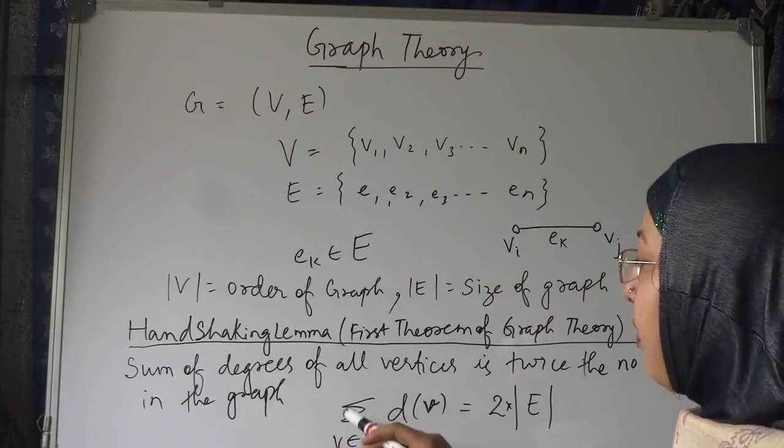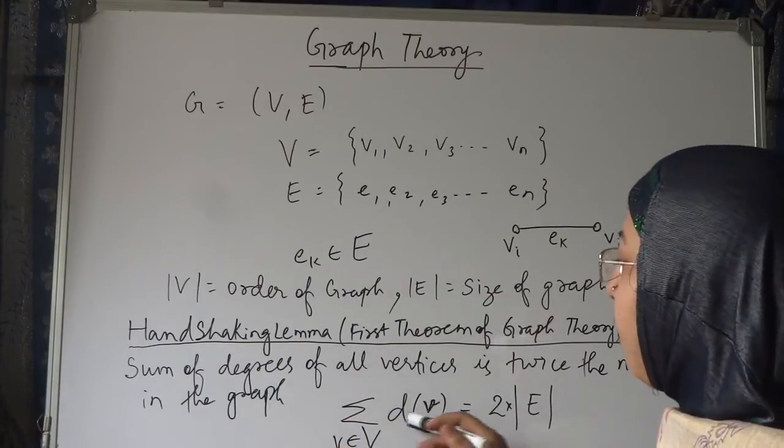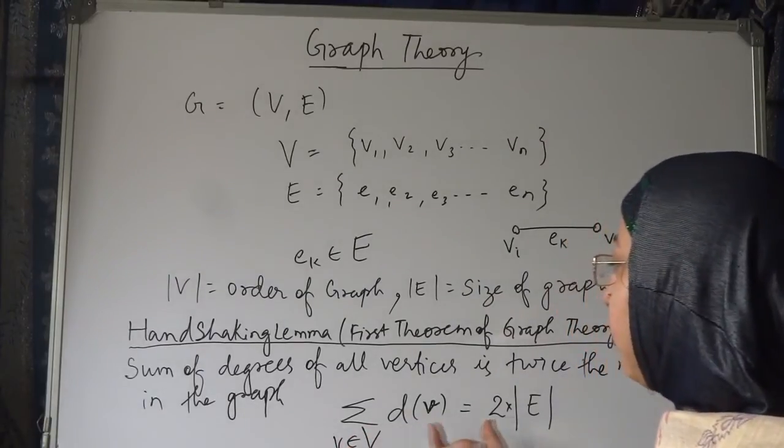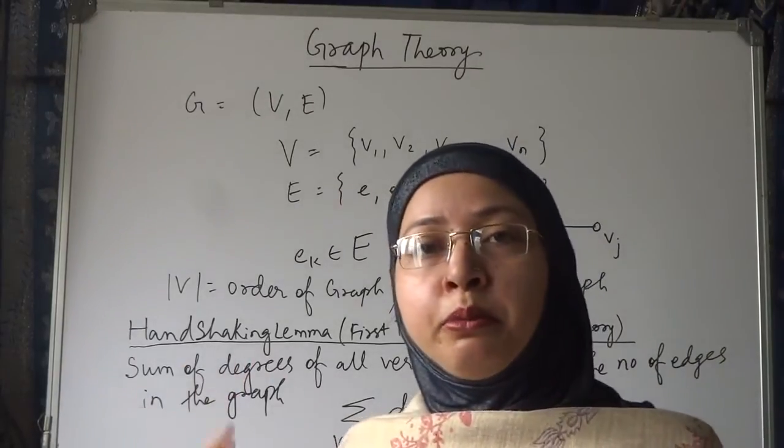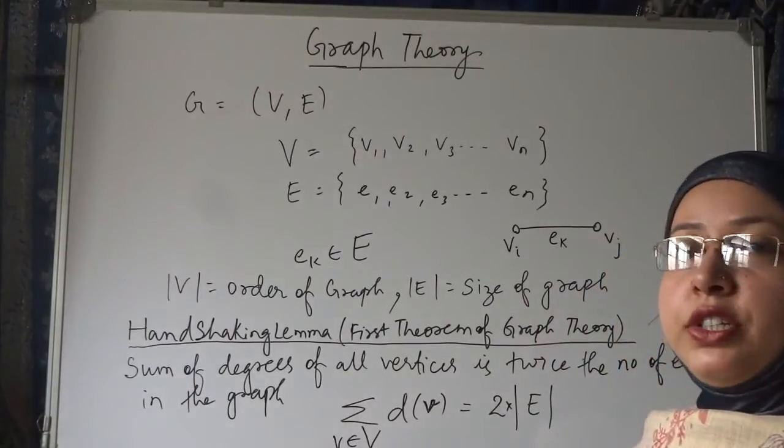That is equal to sum of v belongs to V, d(v). Degrees of all the vertices, what we will do? We will sum it and this will equal to twice the number of edges. Number of edges you have to count and multiply it by 2. That will be the sum of degrees of all vertices.